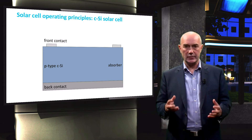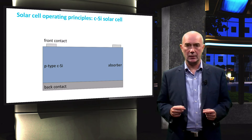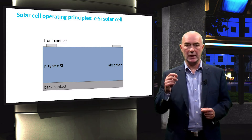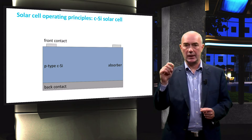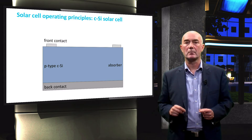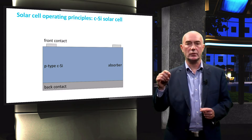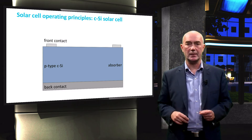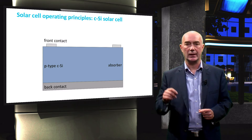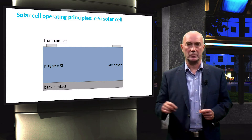With this solar cell, we would be able to absorb light, but we could not collect any separated electrons and holes at the electrodes.